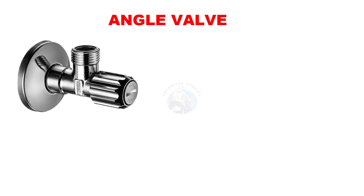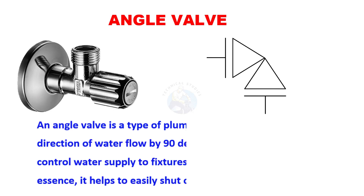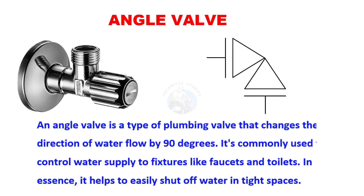An angle valve is a type of plumbing valve that changes the direction of water flow by 90 degrees. It's commonly used to control water supply to fixtures like faucets and toilets. In essence, it helps to easily shut off water in tight spaces.